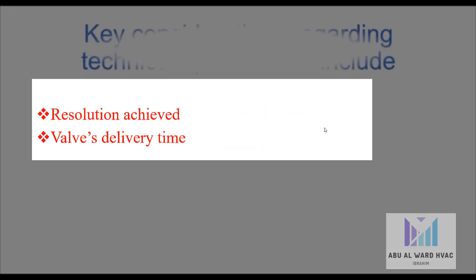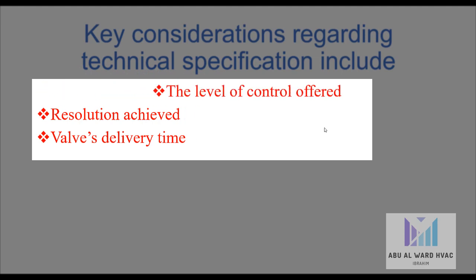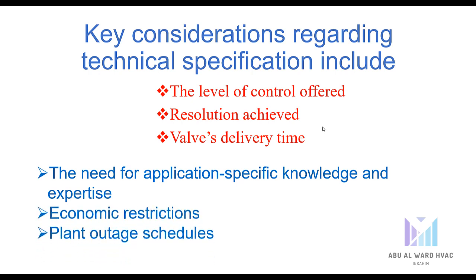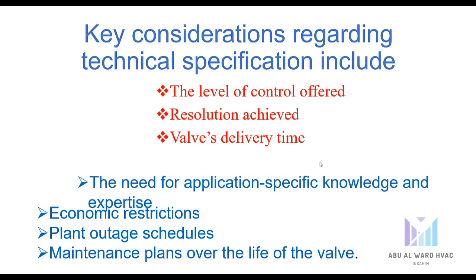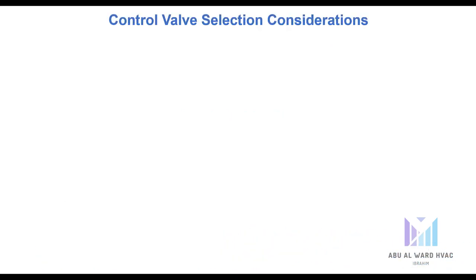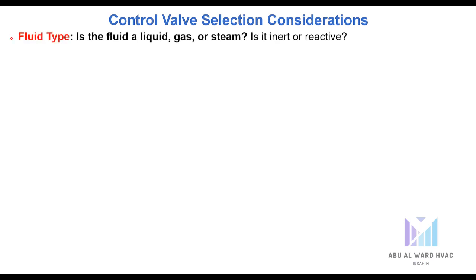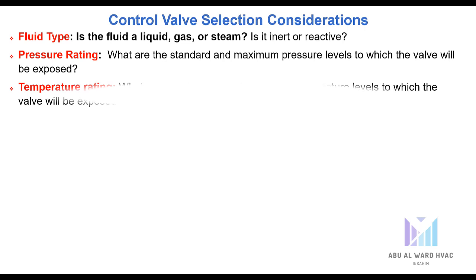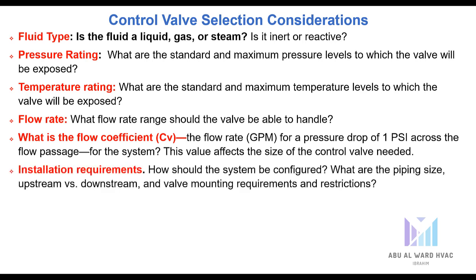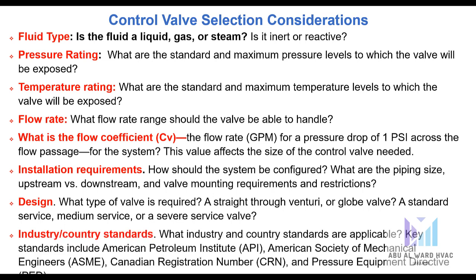Key considerations regarding technical specifications include the level of control offered, resolution achieved, delivery time, maintenance, and longevity. Several factors come into play during selection including the need for application-specific knowledge and expertise, economic restrictions, plant outage schedules, and maintenance plans over the life of the valve. Some of the key control valve selection considerations include fluid type, pressure rating, temperature, flow rate, Cv flow coefficient, installation requirements, design, and industry and country standards.